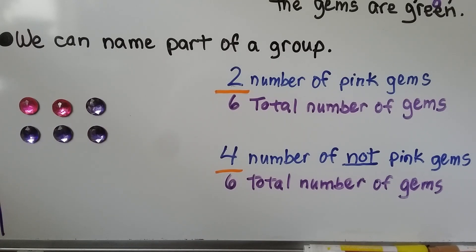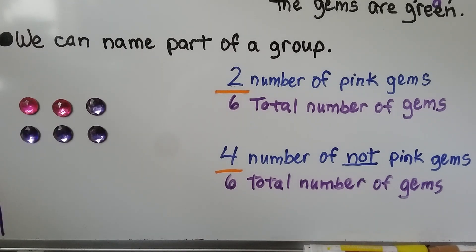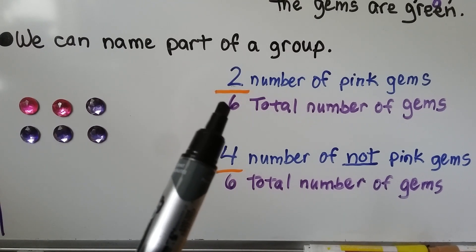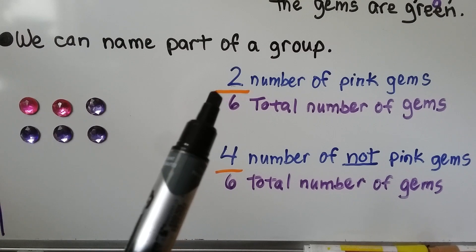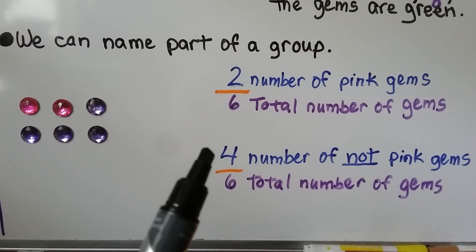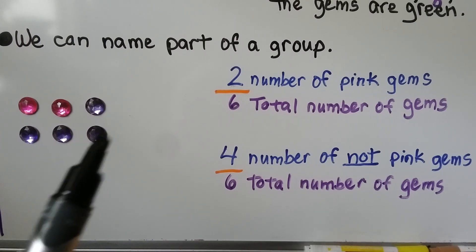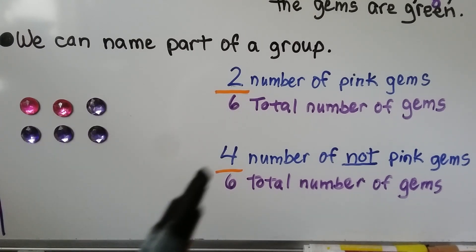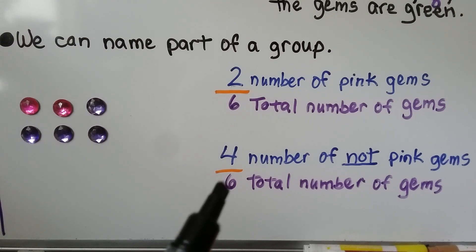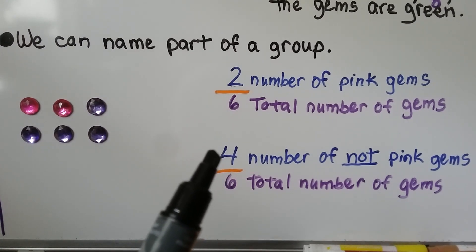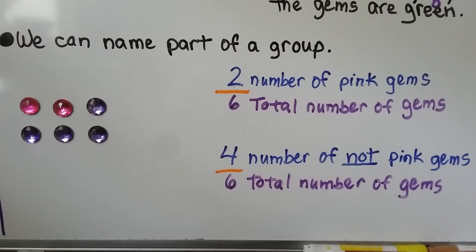We can name part of a group. Here we have six gems and two of them are pink. The number of pink gems — two — is our numerator, and the denominator is six because that's the total number of gems. We can say four sixths are not pink gems. We have four purple ones — those aren't pink. So four sixths are not pink, two sixths are pink.